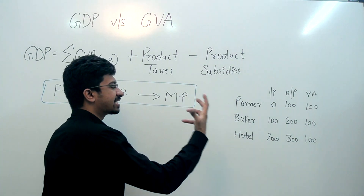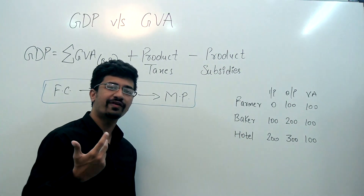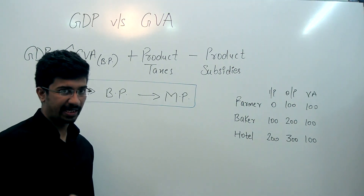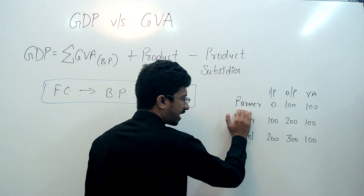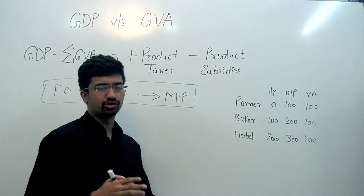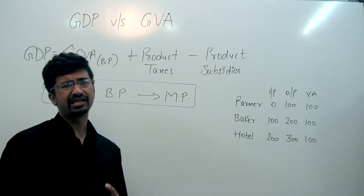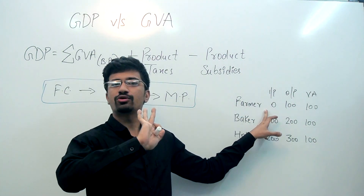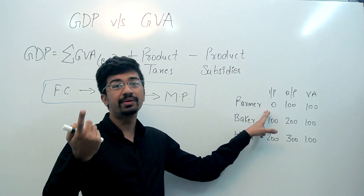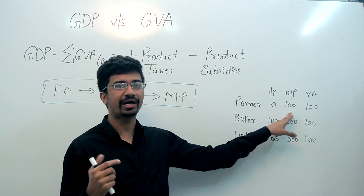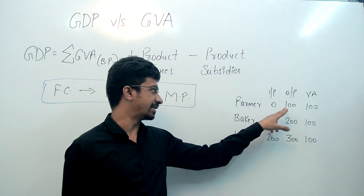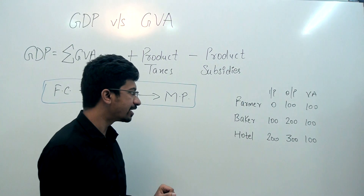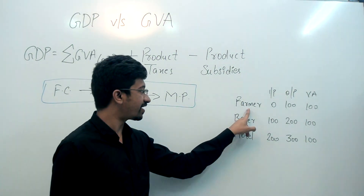हम इस example के through समझेंगे कि gross value addition करने के बाद जो value आएगी, वो GDP के बराबर है। Farmer है, इसकी input cost 0 है — यह hypothetical situation है। इसने कोई पैसा नहीं लगाया, मगर फिर भी 100 रुपए का output produce कर लिया — 100 रुपए का गेहूं। तो farmer का value addition 100 रुपए हुआ।